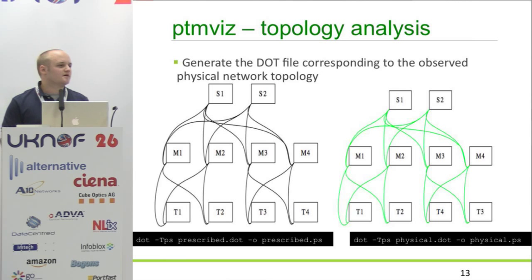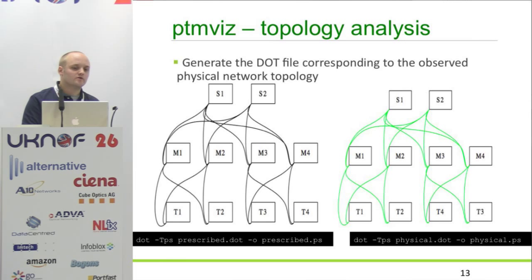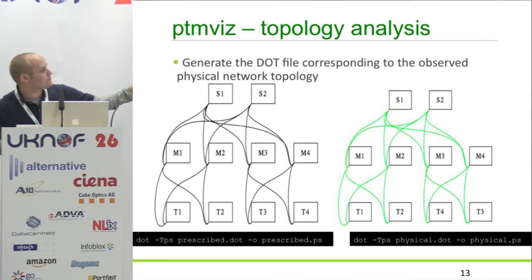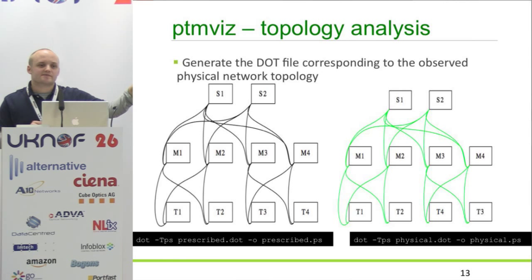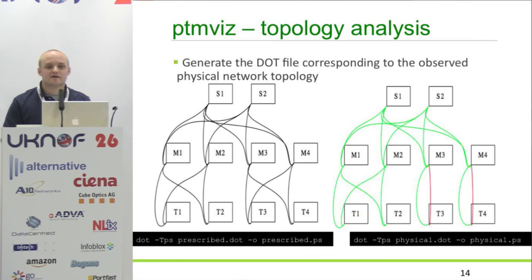Because it's a GraphViz dot file, you can use the dot or twopi interfaces to produce a PNG or PostScript file depending on the status of the cabling in the data center. We've given it the topology, and on the right-hand side you can see the topology has passed because all the links are as expected and they're all green. If two links were down, the graphic output would show which links in particular didn't match, and then you can dispatch your operations team to correct just those switch ports.